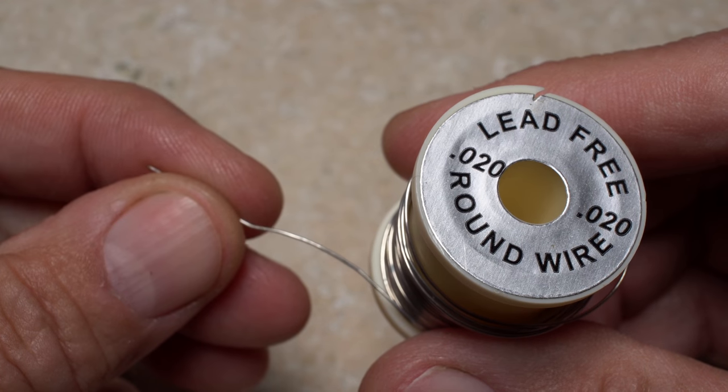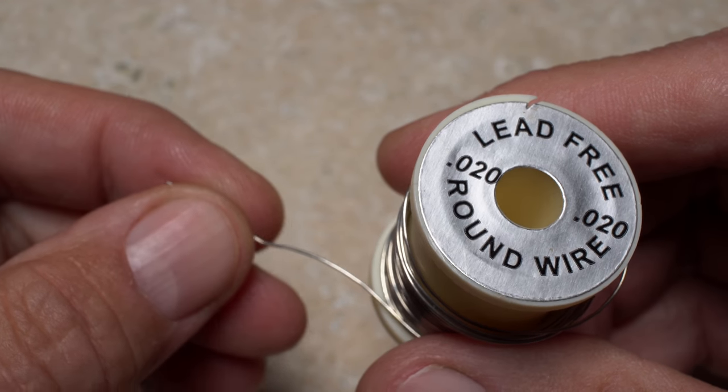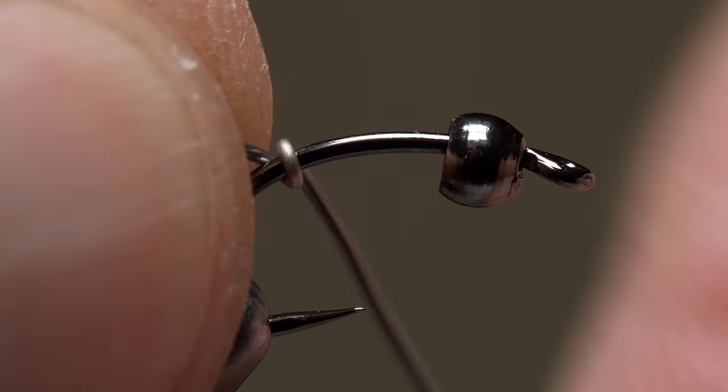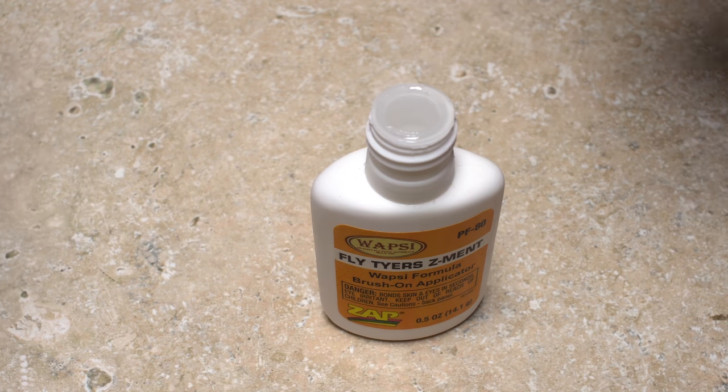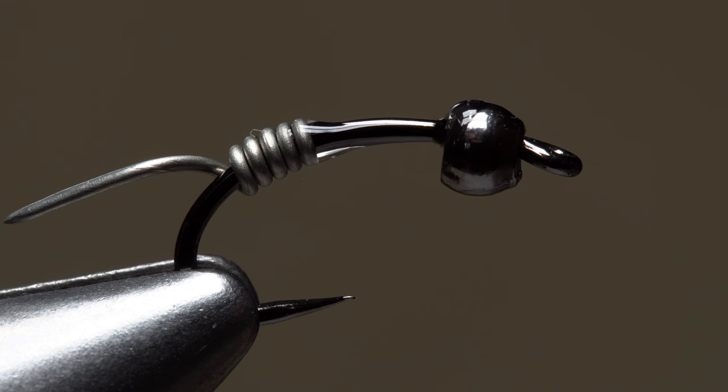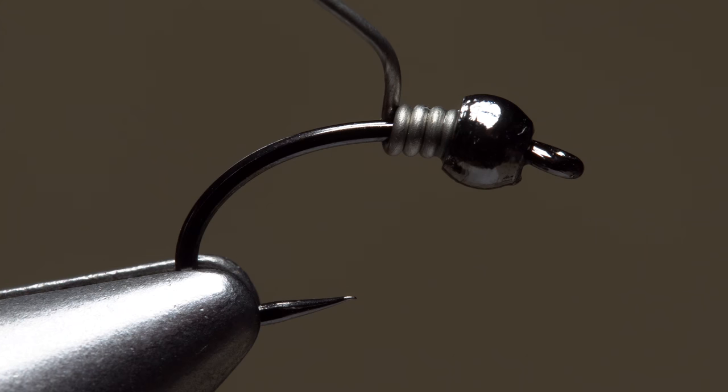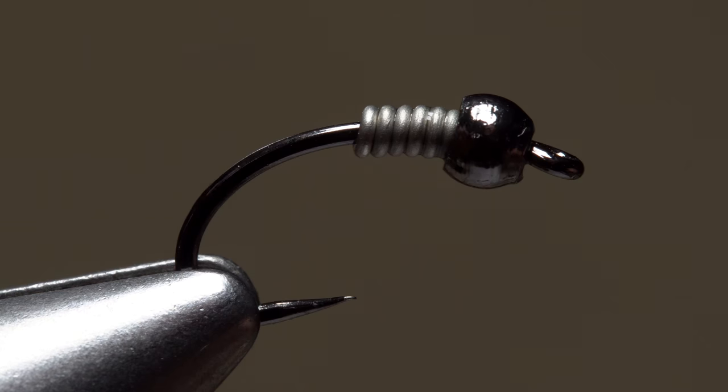.02 lead free wire is used to add still more weight and destabilize the bead. Four to five wraps to start is plenty. A drop of Fly Tire Z-Mint applied to the hook shank between the weight and the bead will really help to lock things in place and allow you to finish wrapping the wire without the whole thing spinning around the hook shank.